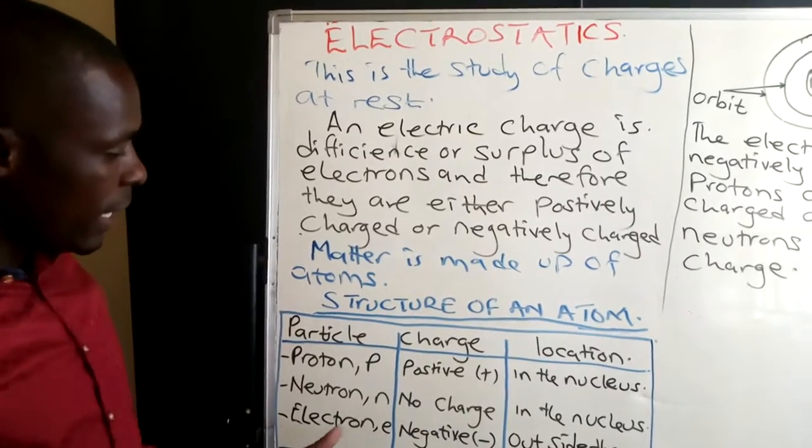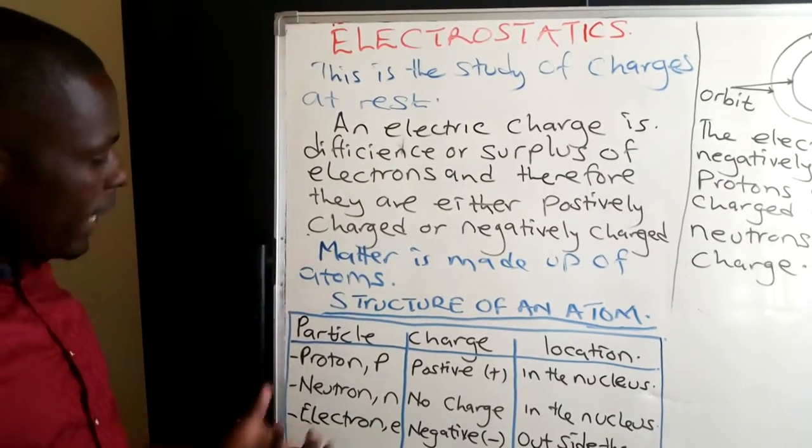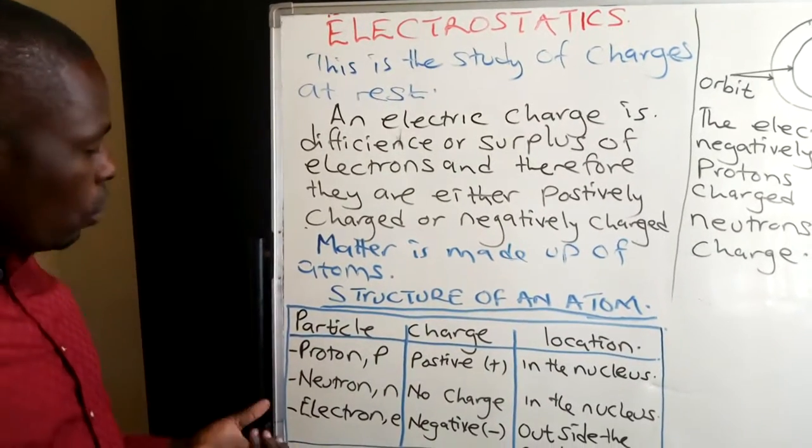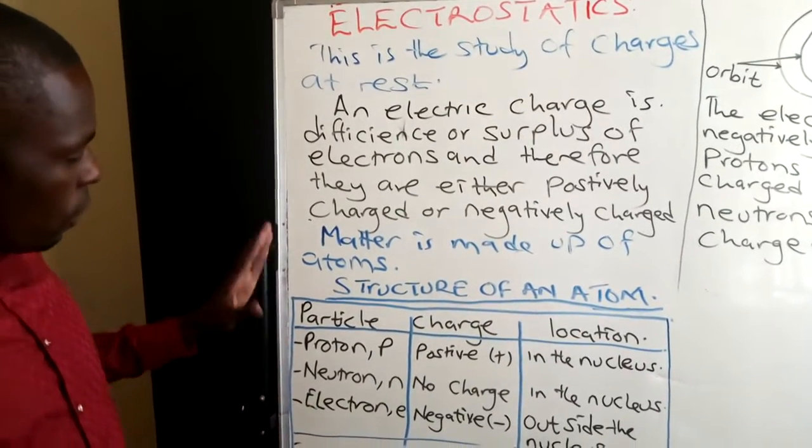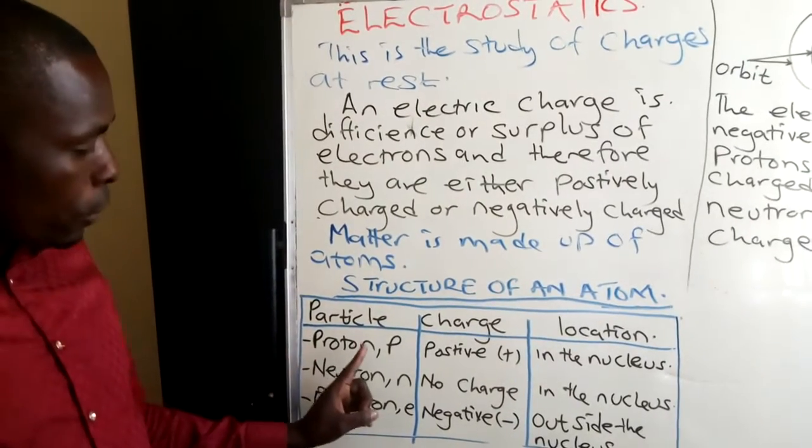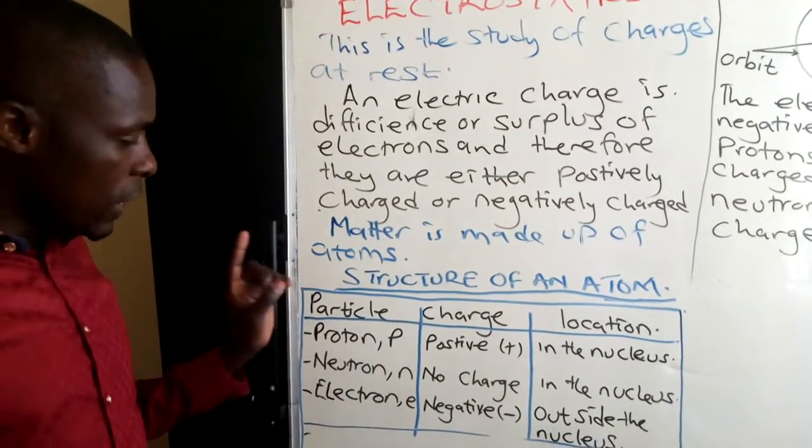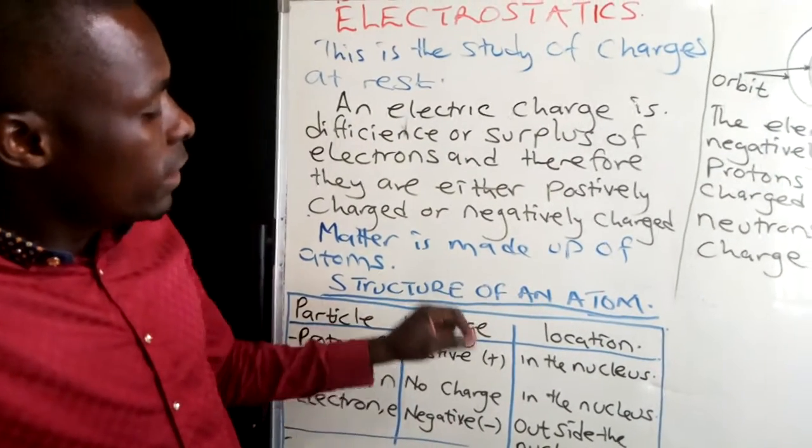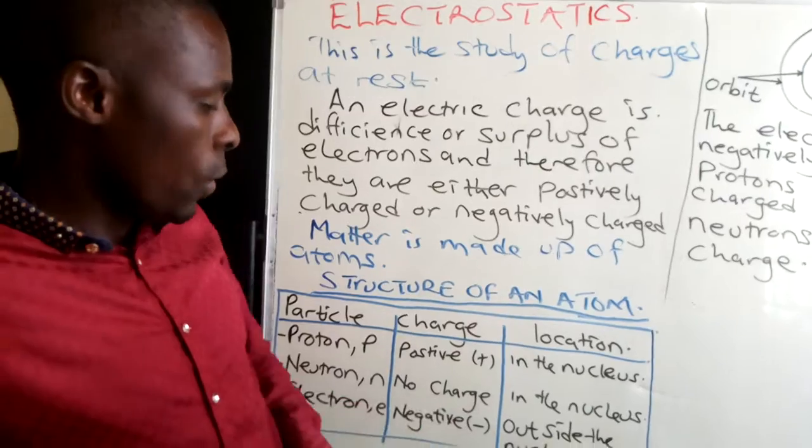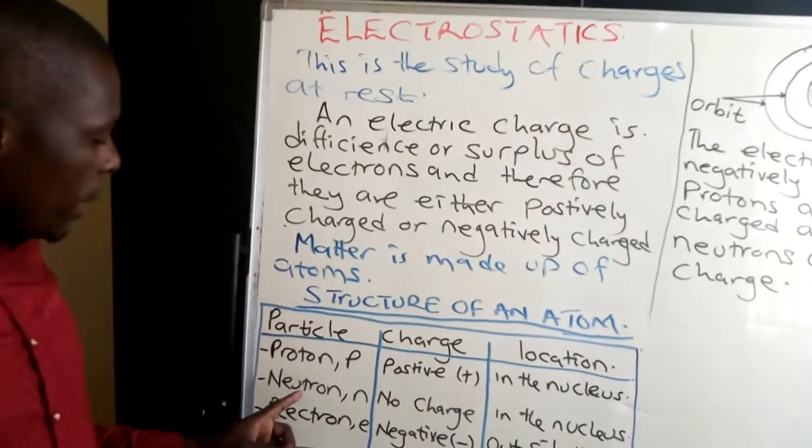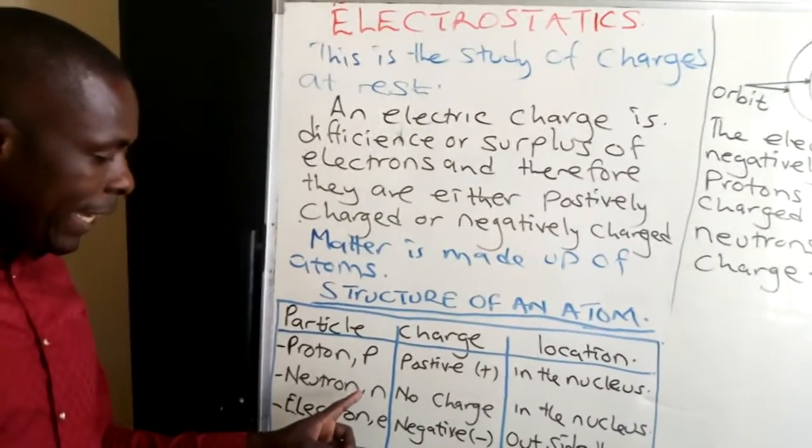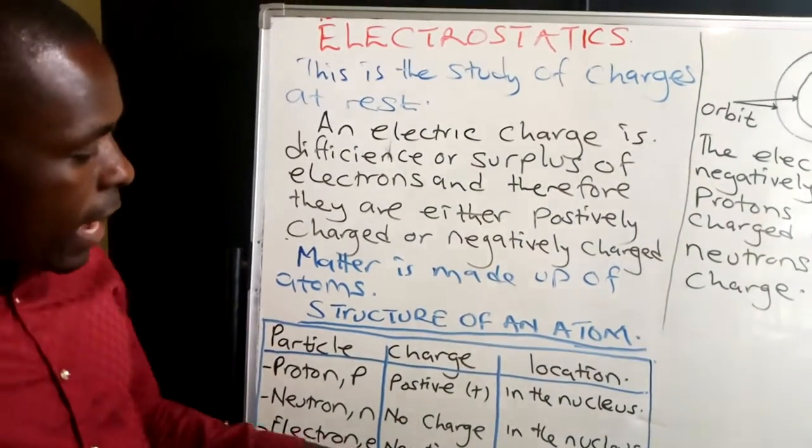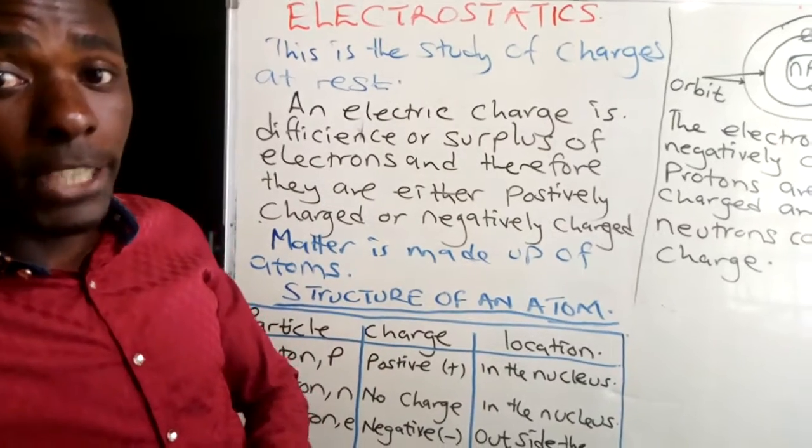This table summarizes for us what is the charge of the particle which is inside. In the column of particles, we have the proton. The proton is represented by P, which is positively charged and it is located in the nucleus of an atom. Then we come to the neutron, represented by N. This one does not carry any charge and it is also in the nucleus of an atom.